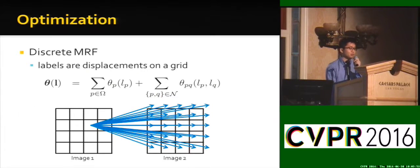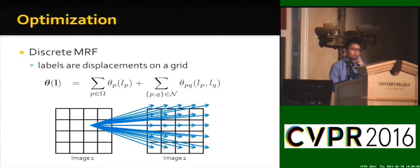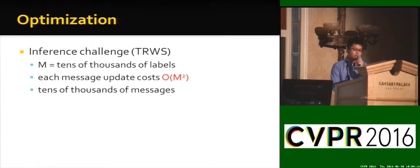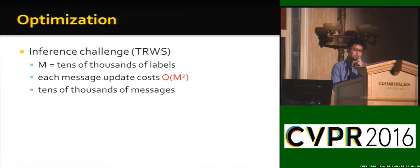Now I will talk about how to optimize the objective. We assume the labels are displacements on a regular grid. For example, F1 has labels on a 5x5 regular grid. To optimize the model — optimizing models with large label sets is challenging because we have thousands of labels, and a brute force approach over tens of thousands of labels is infeasible.